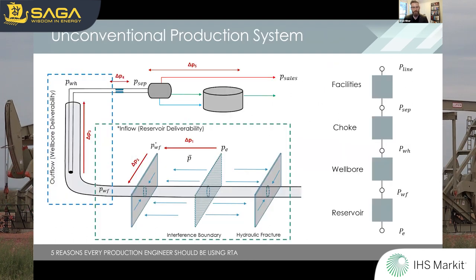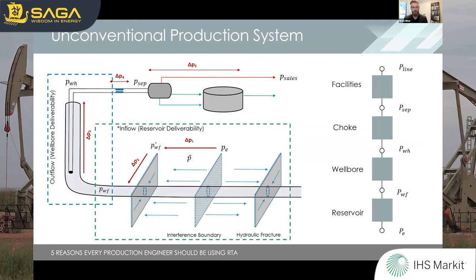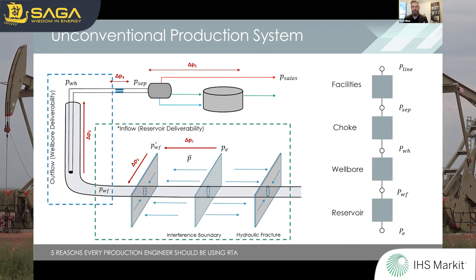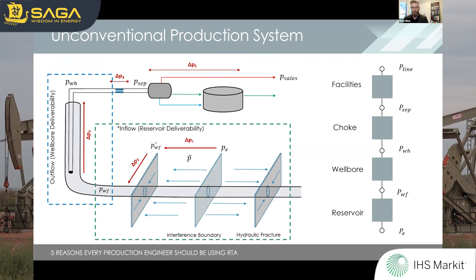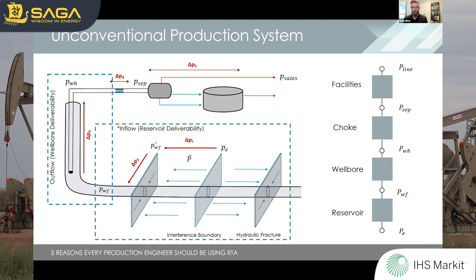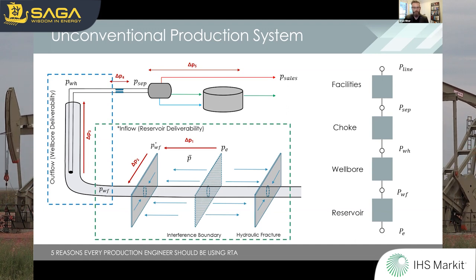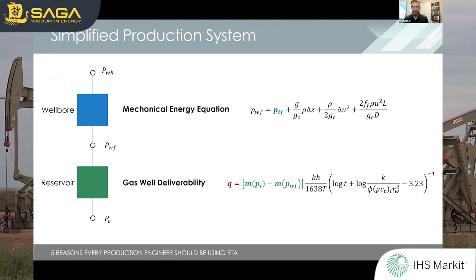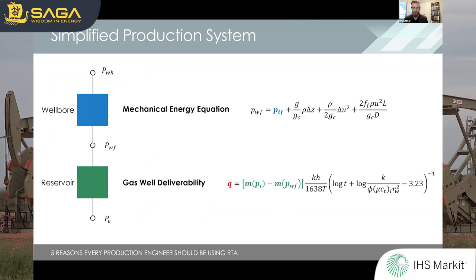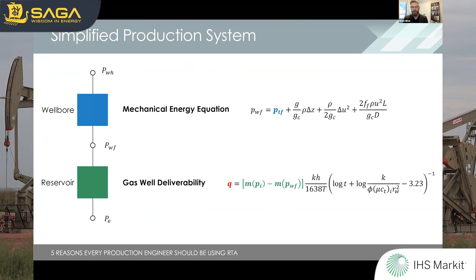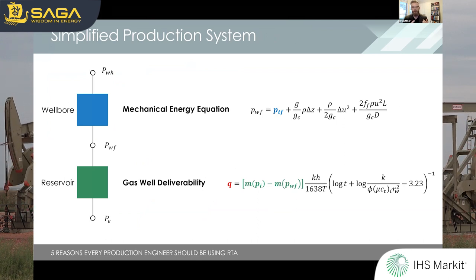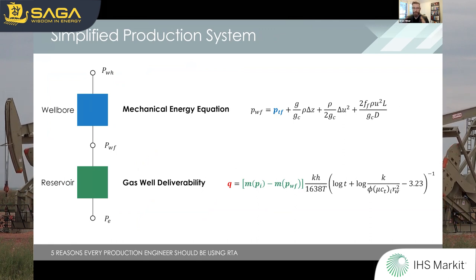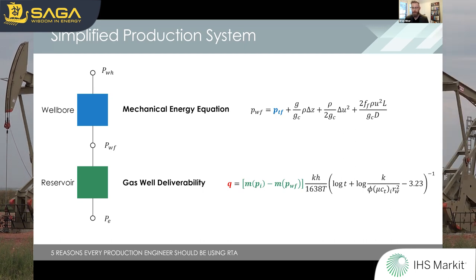Last time I introduced this cartoon — a schematic showing the petroleum system approximated as a system of nodes and elements, each being a component of the reservoir production system. For today, I'll be talking about the outflow (the wellbore) and the inflow (the reservoir), linked by bottom hole flowing pressure, which is why that is such a critical component for RTA analysis. The flow within the wellbore is given by the mechanical energy equation, and the reservoir flow by the reservoir deliverability equation.